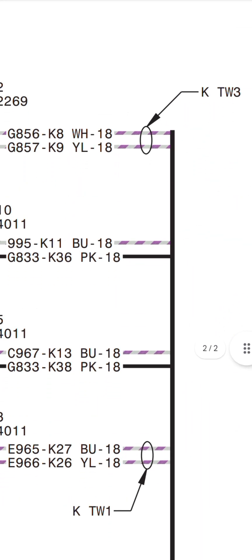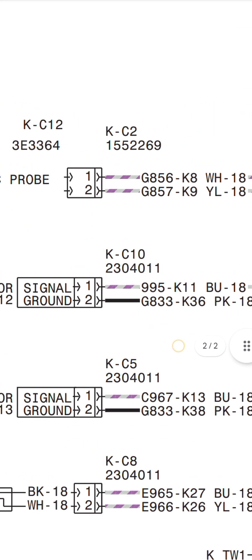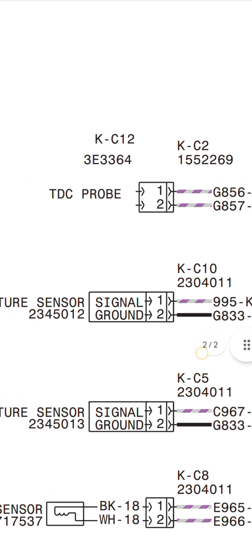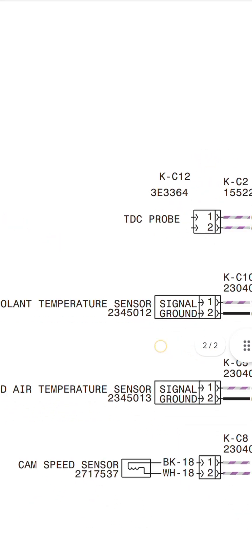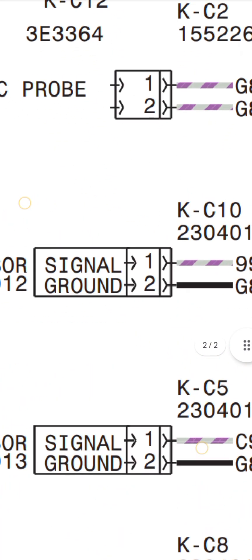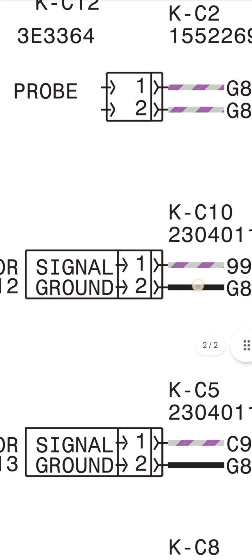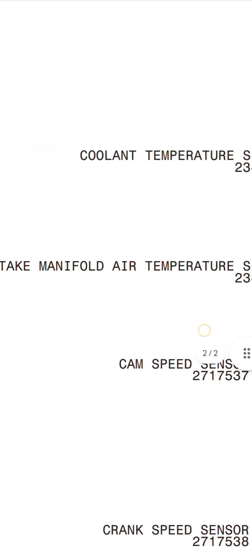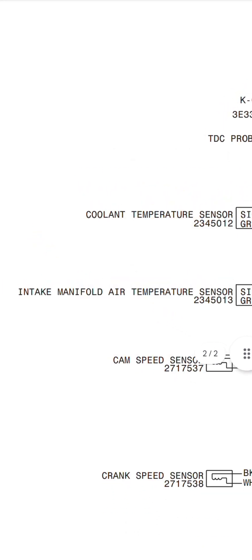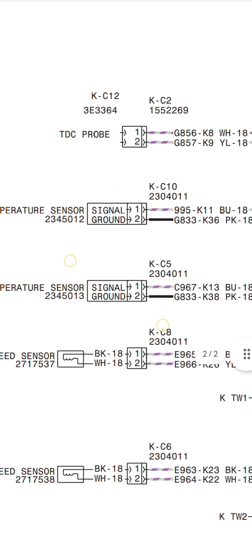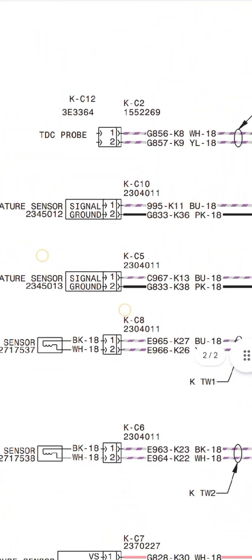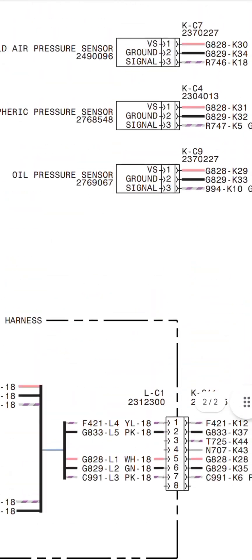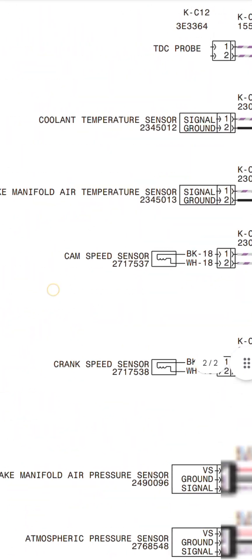The black wire means sensor ground signal. As you can see connector C10 with connector numbers and the coolant temperature sensor. The white and pink wire is a signal and black is ground. Here you can see the intake manifold air temperature sensor signal and ground wires, colors, wire color codes, and wiring numbers.